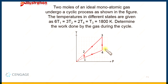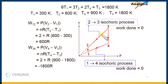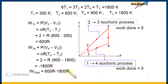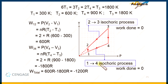Now we need to calculate the total work done by the gas during the cyclic process. The work done in the two isochoric processes is zero. So the total work done equals W₁₂ + W₃₄ = 600R + (-1800R) = -1200R. This is the total work done in the cyclic process. Now let us take the next illustration.